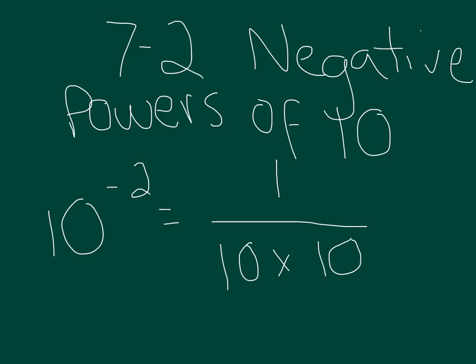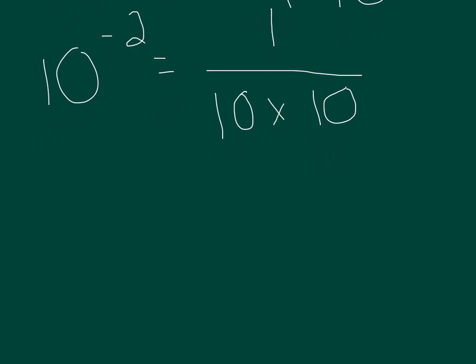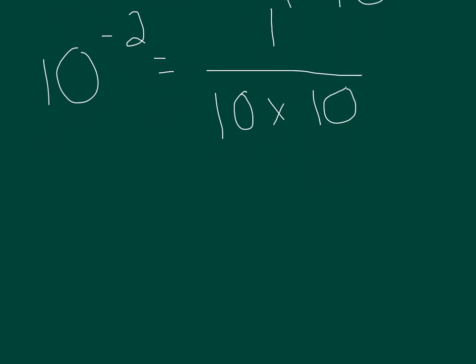Because we know that 10 times 10 is 100, we could also just write it as 1 over 100. So one hundredths. What is one hundredths as a decimal?